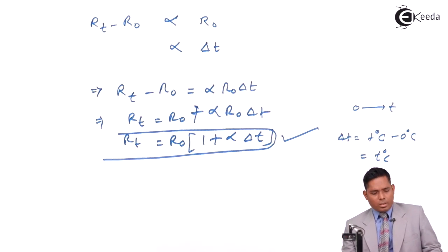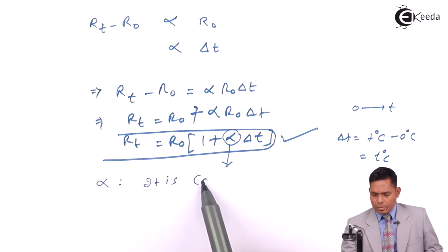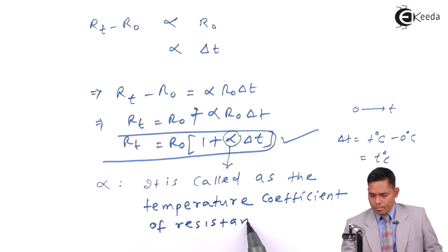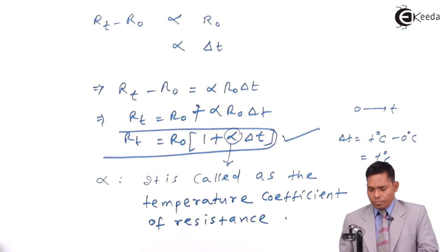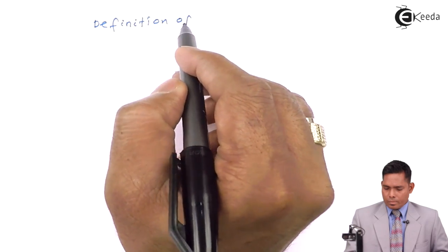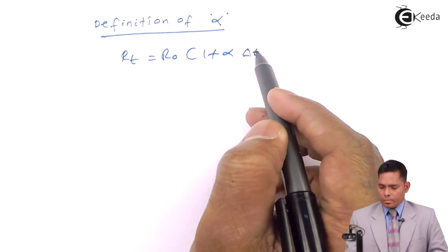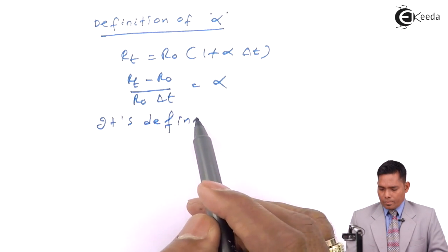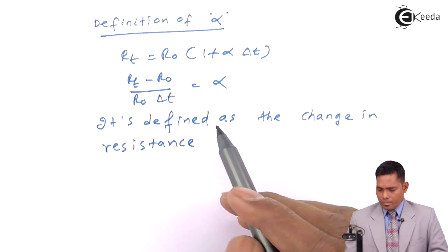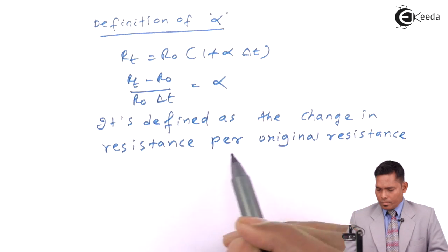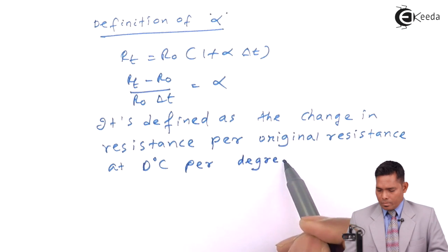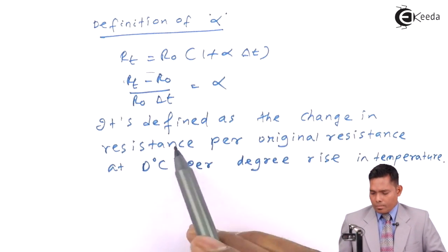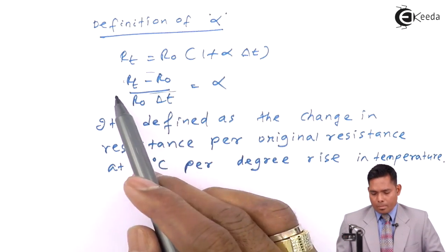This constant alpha is called the temperature coefficient of resistance. Alpha is defined as the change in resistance per unit original resistance at 0 degrees centigrade, per degree rise in temperature.